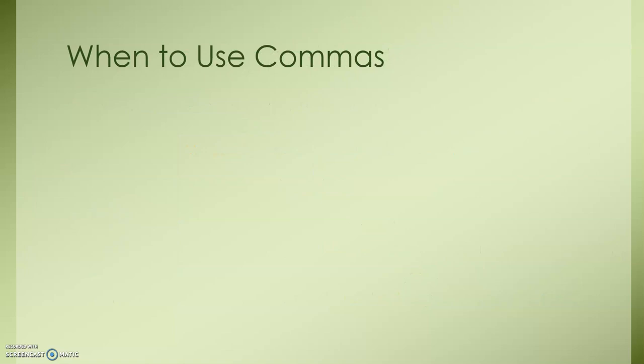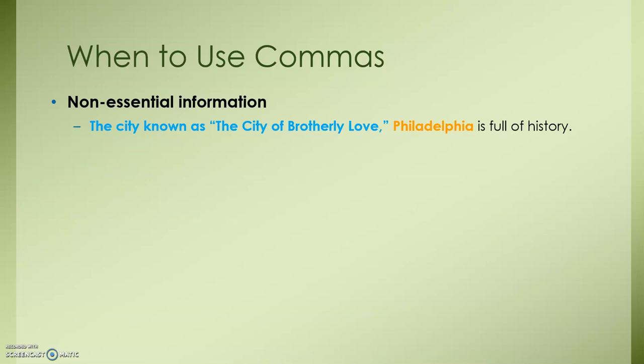We use commas to set off appositives that contain non-essential information. Here's an example: 'The city known as the city of brotherly love' — that's our appositive phrase — 'Philadelphia is full of history.' That first phrase describes the noun Philadelphia, but if you were to take out the phrase in blue, you would still have enough critical information to know which specific city you are speaking about. Therefore, that phrase is non-essential and it can be separated with a comma.